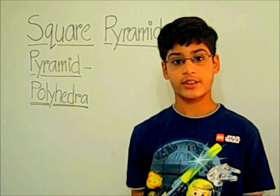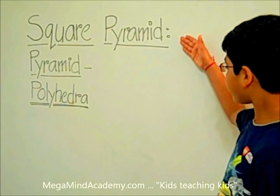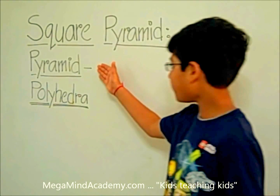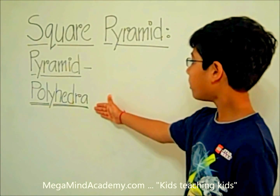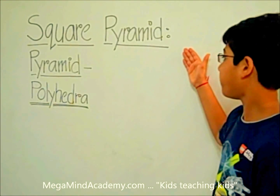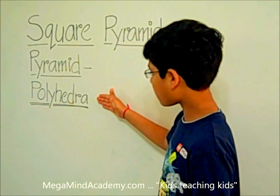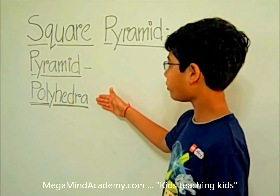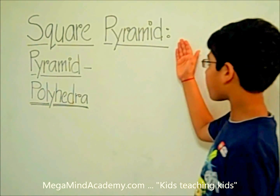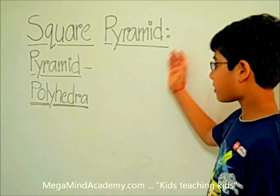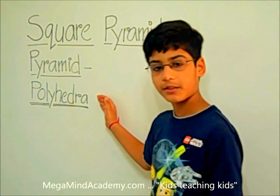Hi, today we're going to learn about square pyramids. A square pyramid is a type of pyramid, which is a type of polyhedra. Before we learn about square pyramids, let's first learn about polyhedra.